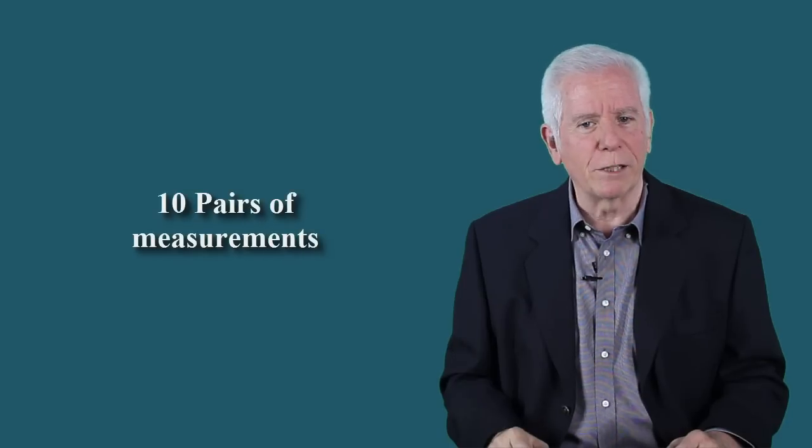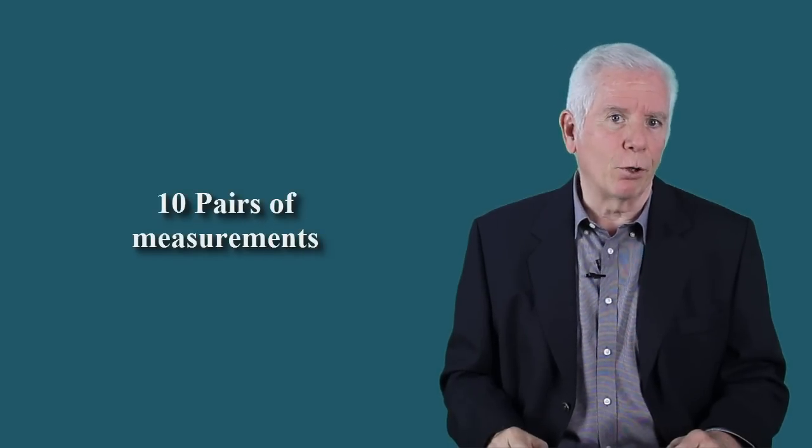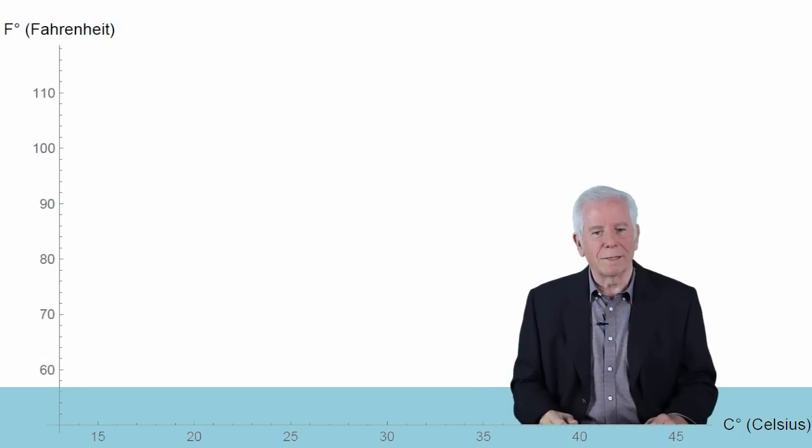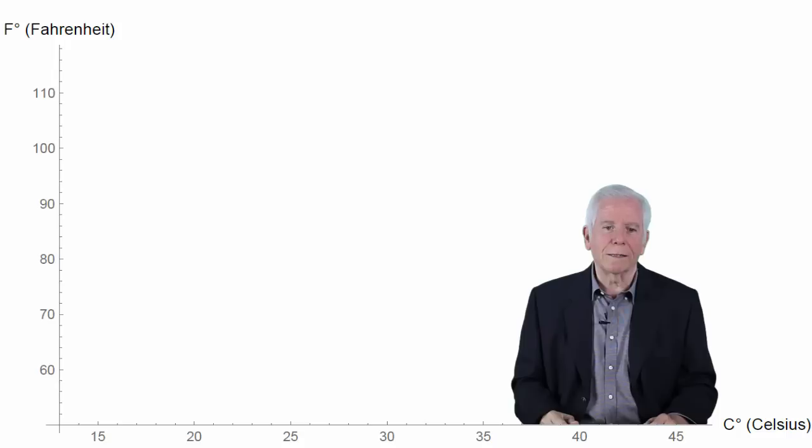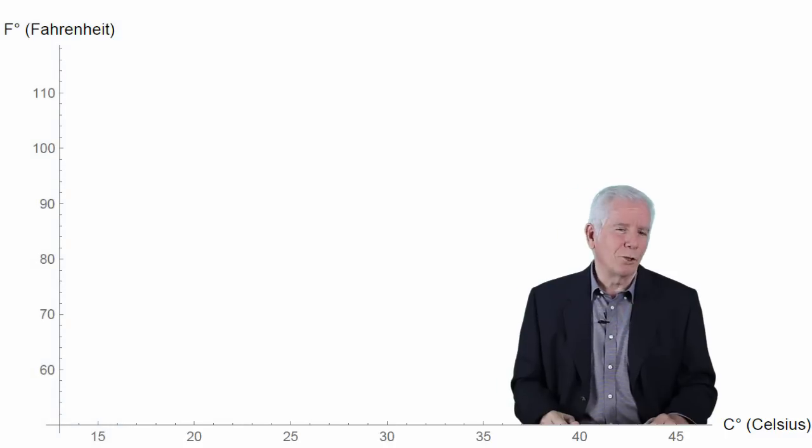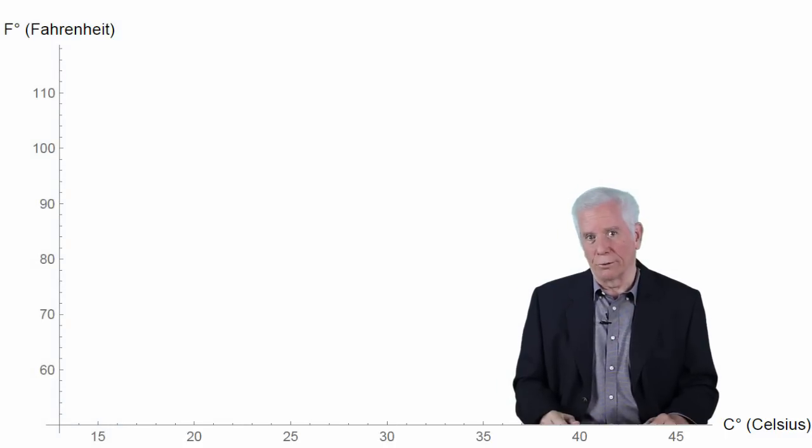We now plot in a two-dimensional coordinate system. On the horizontal axis, we mark temperature readings in Celsius. On the vertical axis, the same in Fahrenheit. Ignoring possible measurement errors, the points will look like this.